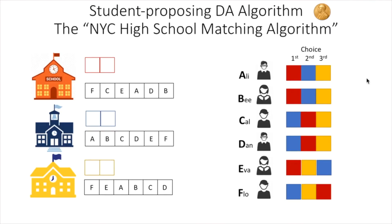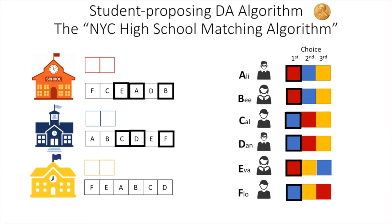Processing all first choices together: Ali, B, and Eva put the red school as first choice, while Cal, Dan, and Flo put the blue school as first choice. However, each school only has two spots, so only two students per school can be tentatively assigned. Based on the priority list, Eva and Ali get spots in the red school, and Cal and Dan get spots in the blue school. This means four students are tentatively matched, but B and Flo have no match.